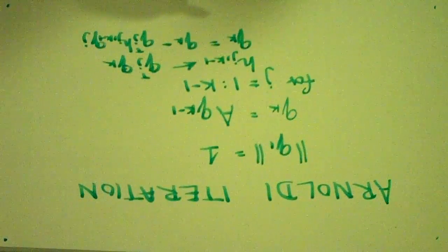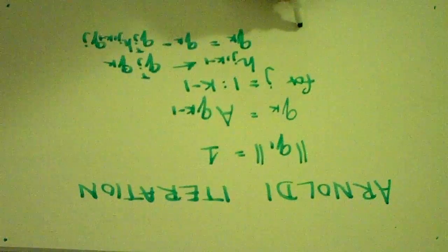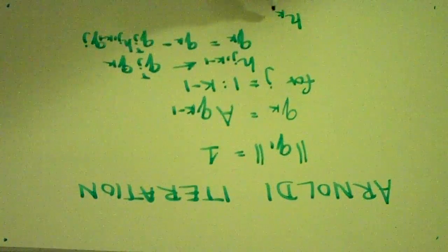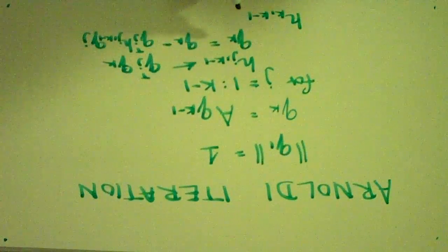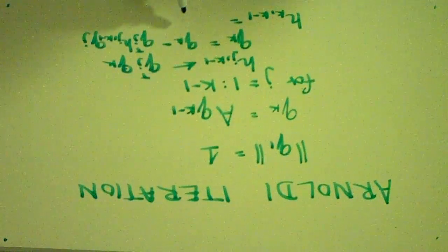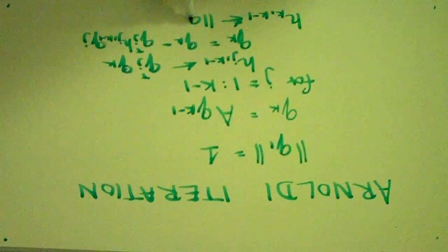And then, we can normalize this QK. So, we end the loop here. And set H of K comma K minus 1 equal to the norm of QK.